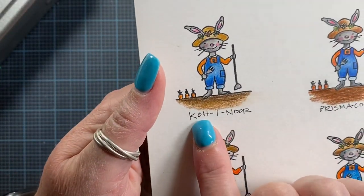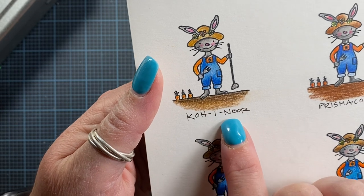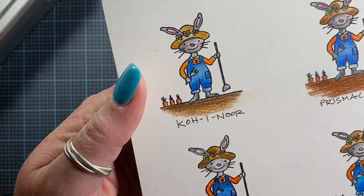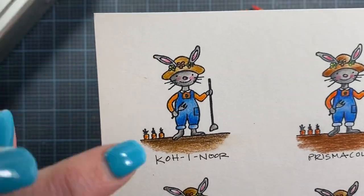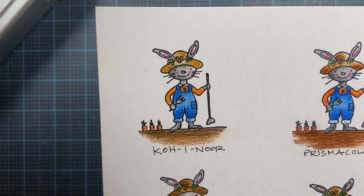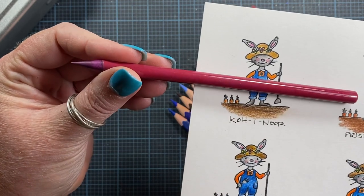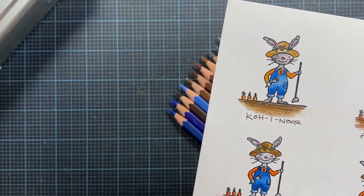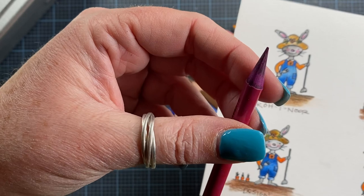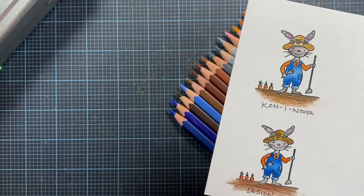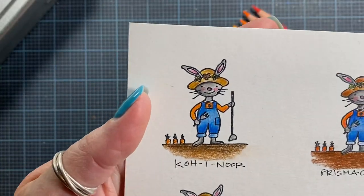So here is the results of the Koh-I-Noor, I'm not sure how to say that, I'll never say it correctly. But these are woodless pencils, and I really like these pencils actually, I wish they had more colors. They just basically have I think 24 colors, but the whole entire pencil is pigment, which I really like. And they work really nice. I actually really enjoy using them.